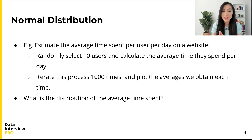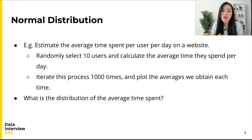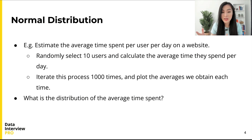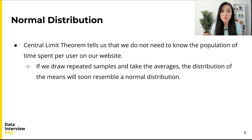Let's say we want to estimate the average time spent per user per day on a website. We randomly select 10 users and calculate the average time they spent per day on our website. We iterate this process, say a thousand times, and plot the averages we obtain each time. On a graph, the x-axis will be the average time spent per day among all users and the y-axis is the frequency. What is the distribution of the average time spent?